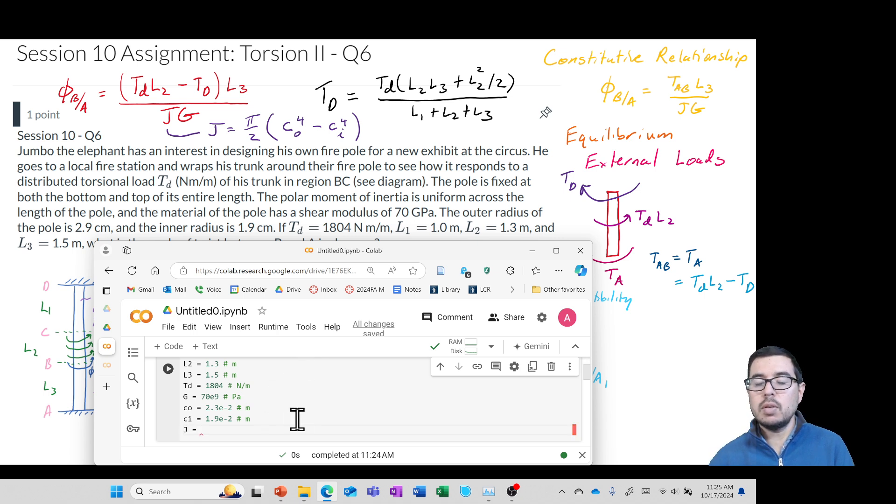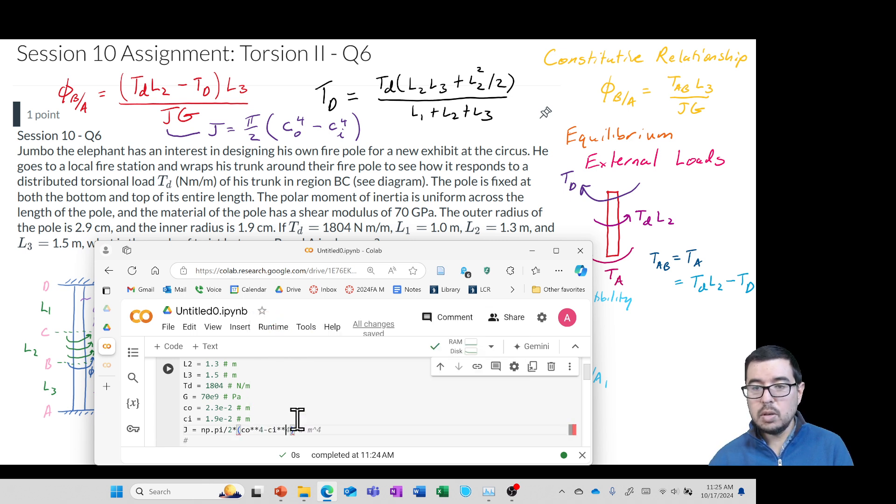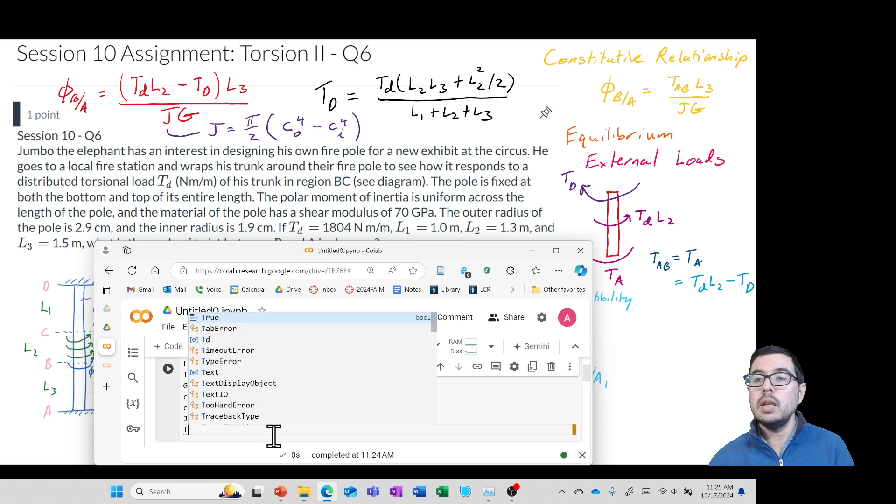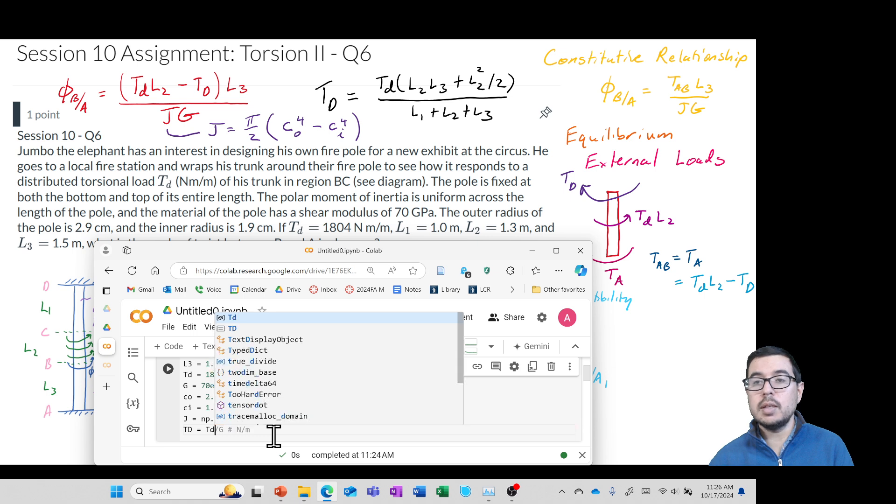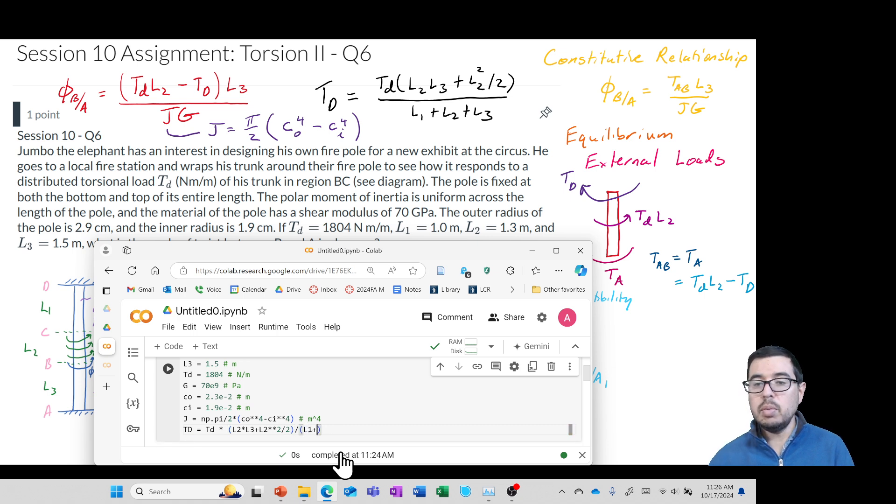So, let's go ahead and figure out what J is. So, that's going to be pi over 2 times C0 to the 4th, minus C internal to the 4th. And let's go ahead and start on these other two equations. So, we'll do the big TD, so we'll say TD is equal to T lowercase d times L2 times L3 plus L2 squared divided by 2, and then this is all divided by L1 plus L2 plus L3, like that.